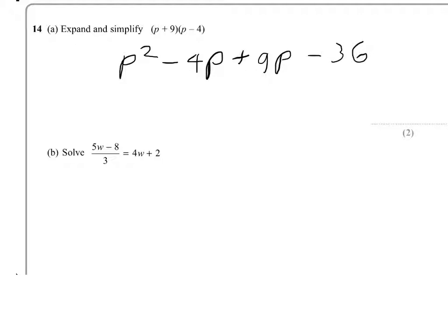I've got to simplify. The p squared stays as it is. Now, minus 4p plus 9p is the same as 9p minus 4p, which gives me plus 5p. And then we have minus 36. So, that's the first part.